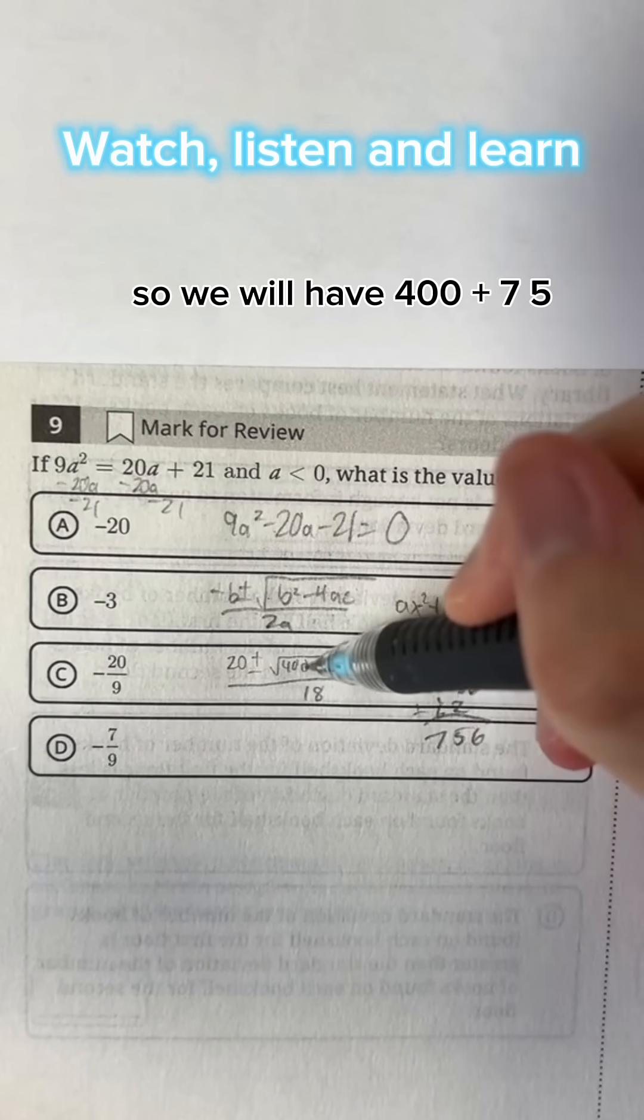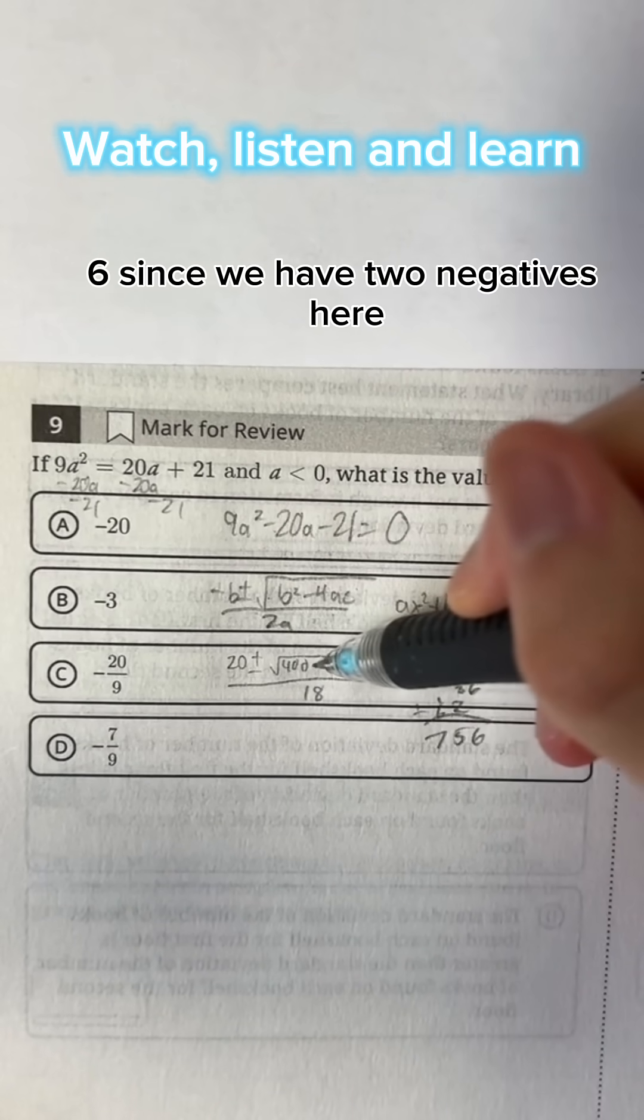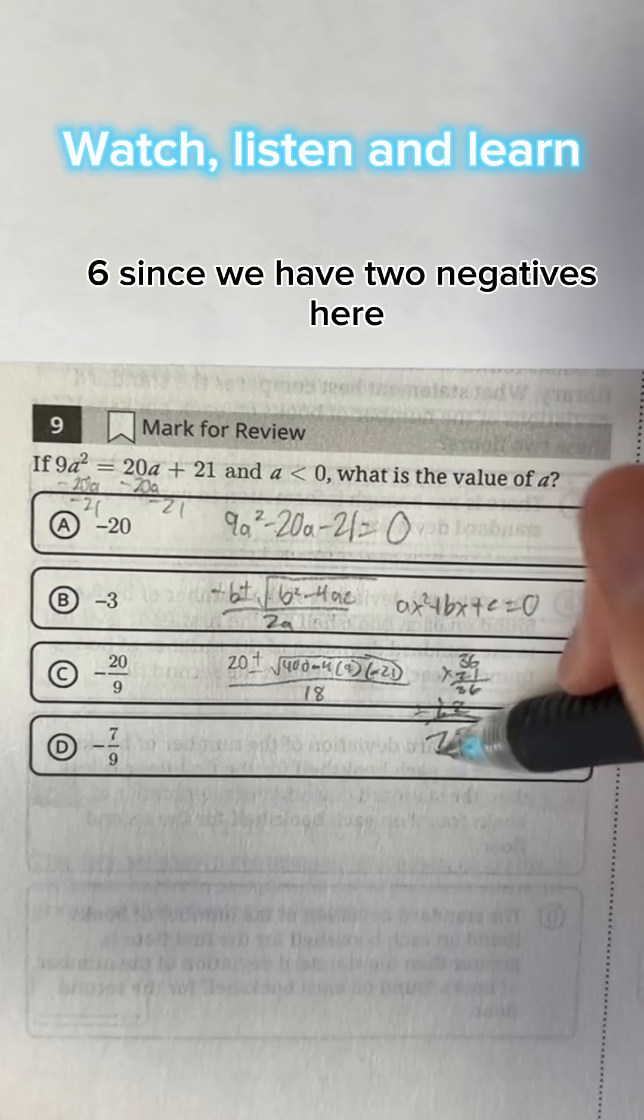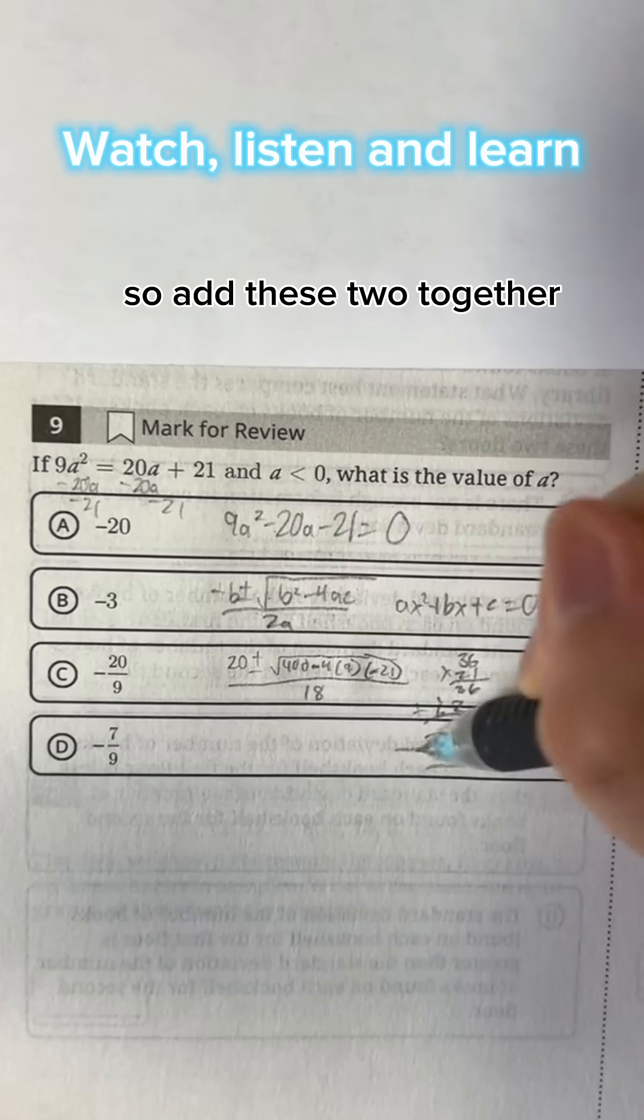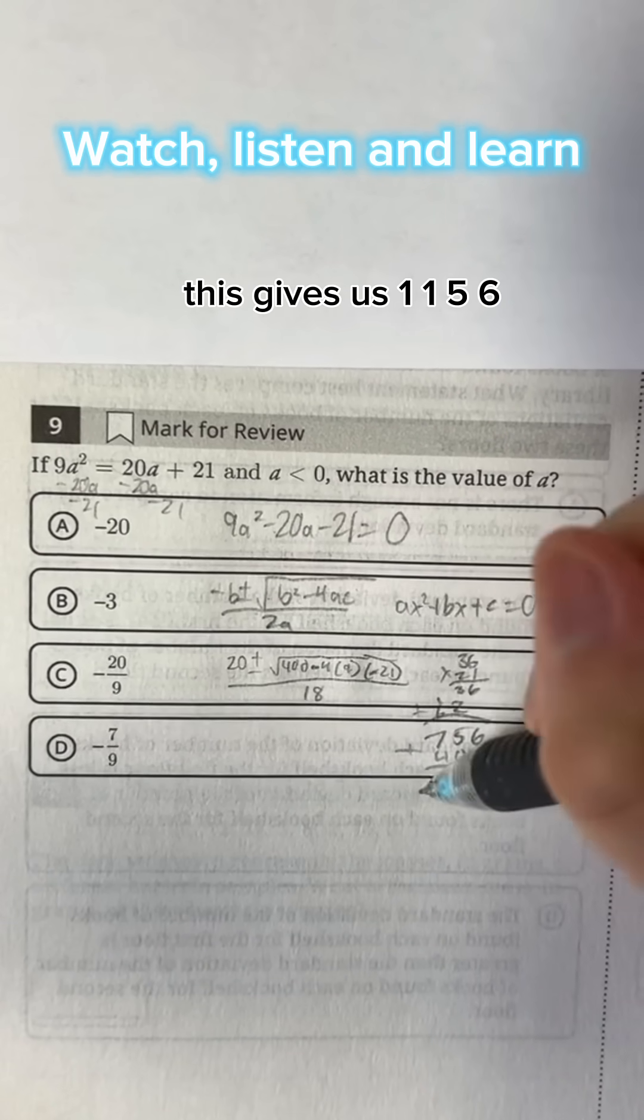So we will have 400 plus 756 since we have two negatives here. So add these two together. This gives us 1156.